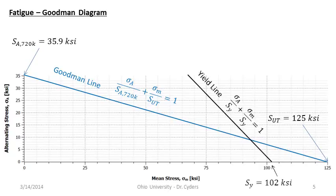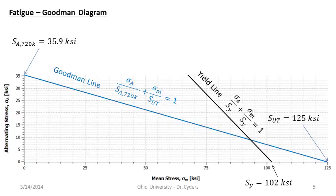The yield line defines another part of the envelope we must stay below. If we design for any operating point on the Goodman line up to where it meets the yield line and then down along the yield line, that theoretically gives failure at 720,000 cycles. So if I have a mean stress of 75 KSI and want failure at 720,000 cycles, I would design for 14 KSI alternating stress — that's what this envelope tells you: on this line, we have a theoretical factor of safety of one.